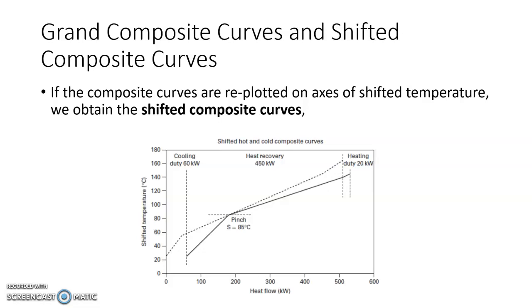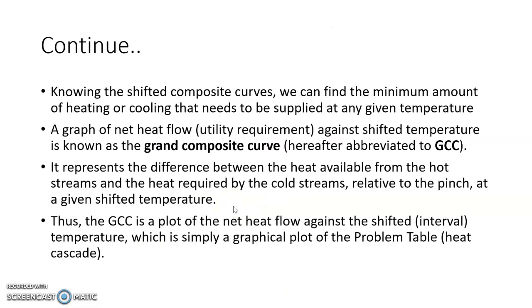Process-to-process heat recovery is 450 kilowatts. Above pinch, the hot stream falls short of supplying all the duties to the cold stream, and hence we require heating utility. Below pinch, the cold stream fails to receive all the energy supplied by the hot streams, and hence we require some amount of cooling utility. This shifted composite curve provides the same information as the actual temperature composite curve, and from it we can find the minimum amount of heating and cooling utility.